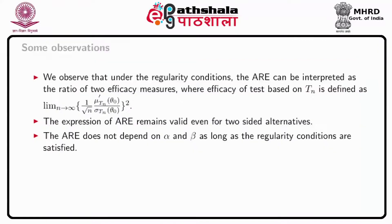From the expression of ARE we observe that under the regularity conditions, the ARE can be interpreted as the ratio of two efficacy measures, where the efficacy of the test based on T_n is defined as the limit as n tends to infinity of (1/root(n)) times mu prime(T_n, theta naught) divided by sigma(T_n, theta naught), whole squared. Furthermore, the expression of ARE remains valid even when the alternative is two-sided, and the ARE does not depend on alpha and beta so long as the regularity conditions are satisfied. Thus, unlike fixed-sample efficacy, the ARE does not suffer the same disadvantages.